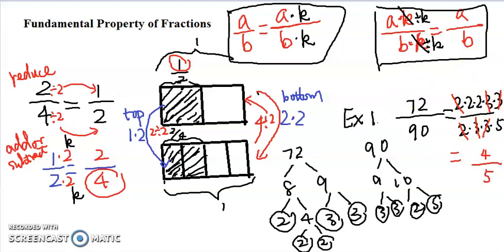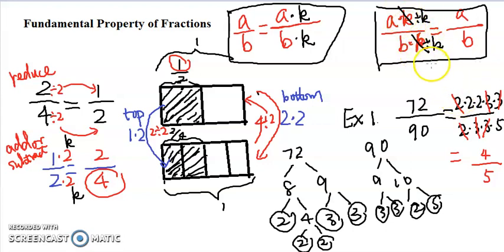We are using the fundamental property right here. If you see a common factor in the numerator and denominator, you can divide to get rid of them — you can just cross them out. So 72 over 90 reduces to 4 over 5.